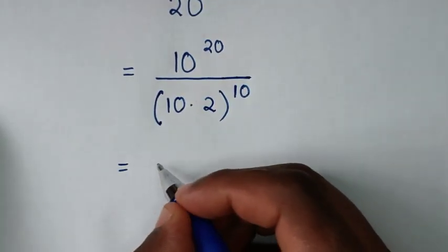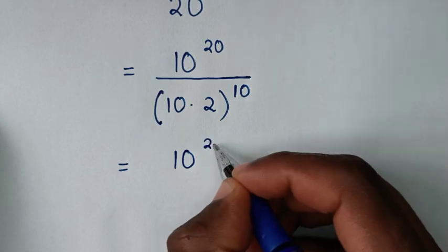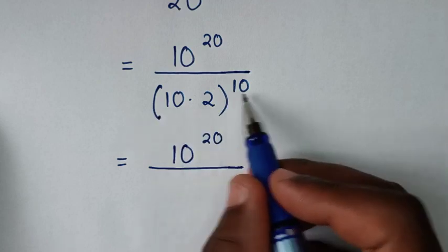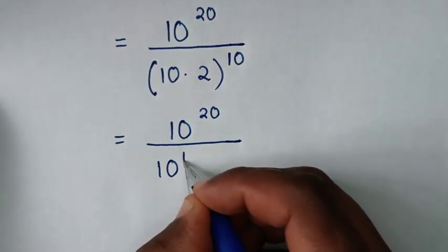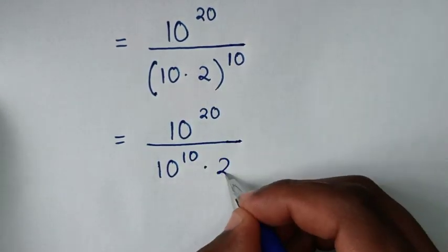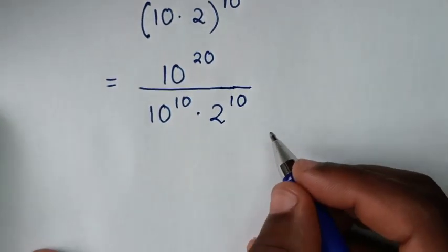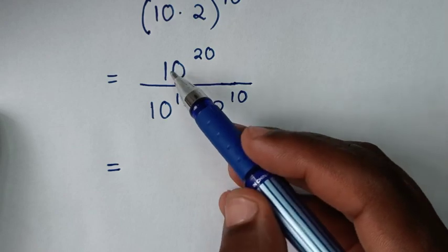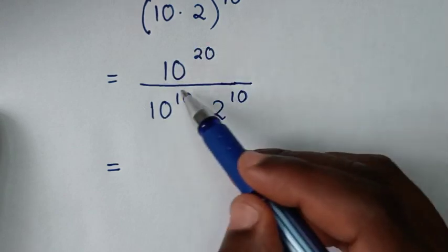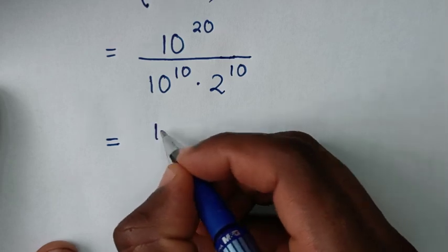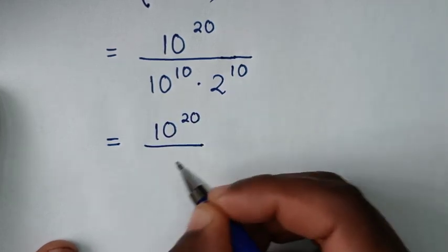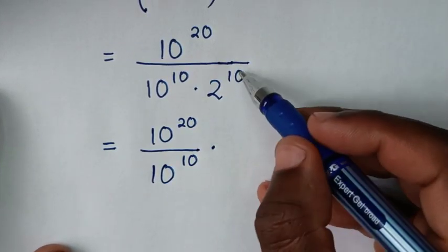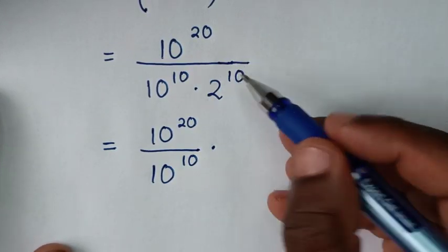Then it will be equal to 10 power of 10, then over — from here we'll take the power of 10 inside the bracket — so it will be 10 power of 10 times 2 power of 10. Then it will be equal to: taking the division of exponents with the same base of 10, so it will be 10 power of 20 over 10 power of 10, then times — we're left with 1 over 2 power of 10 in the denominator.